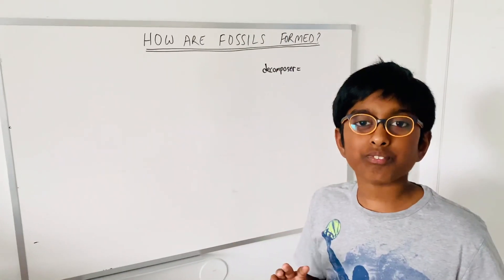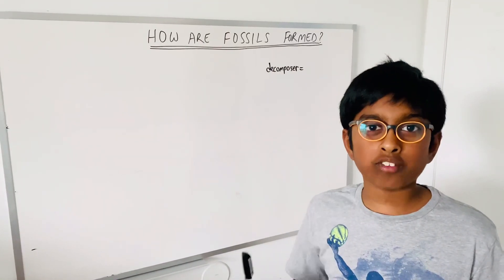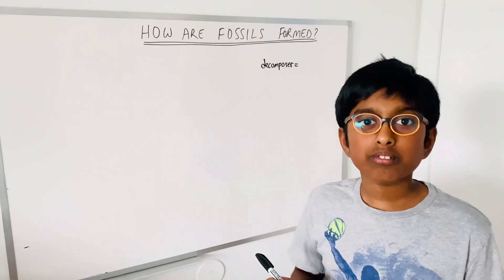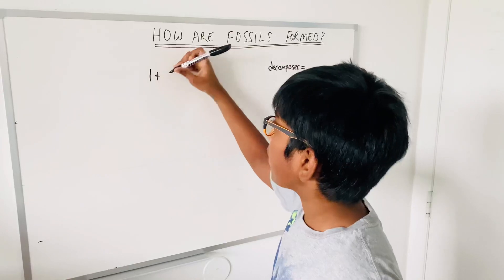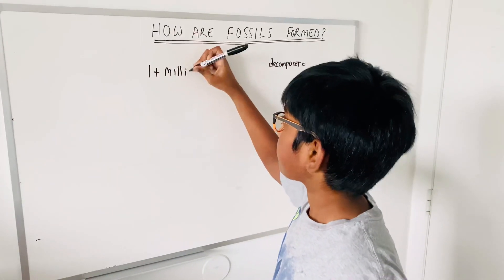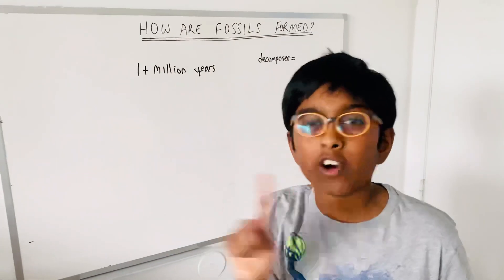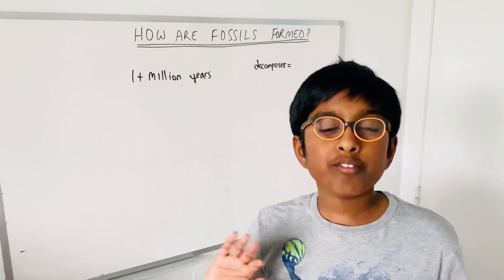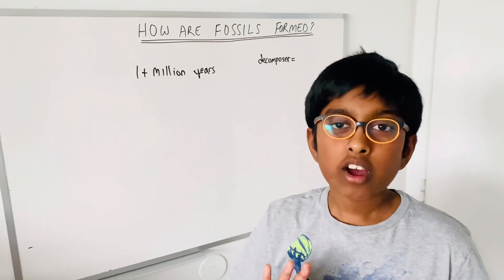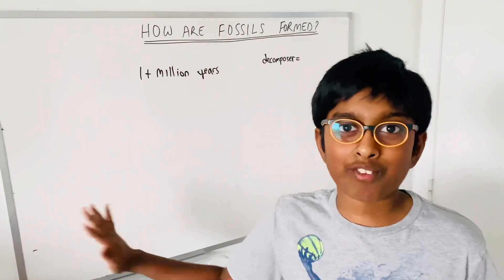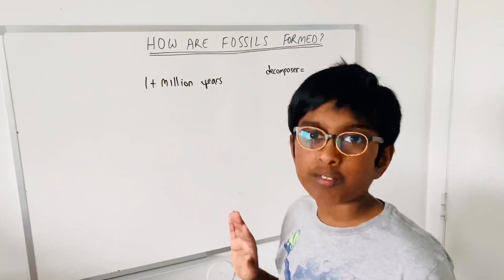And the next question is - how many years does it take for a fossil to form? Okay, guys, if you got one plus million years, you are correct. You may think that fossils form in only three days. No, no, no, no, no, that's not correct. They form after more than one plus million years. So, it may take 10 million years, it may take 100 million years, depending on the fossil. So, yeah, that's how much time it would take for a fossil to form.